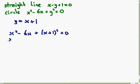Now, if we multiply this out, we're going to get x squared minus 6x, plus x squared, plus 2x, plus 1. These last three terms have come from the x plus 1 squared being multiplied out.